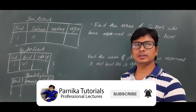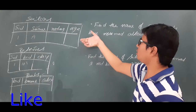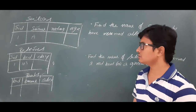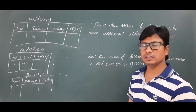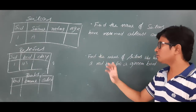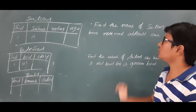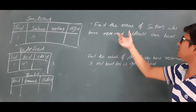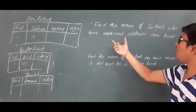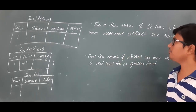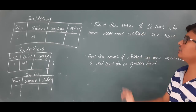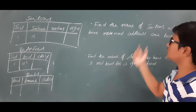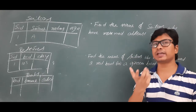Good morning friends. In the last video we identified relational algebra expressions for a few queries for the given three relations. In this video we will identify relational algebra expressions for two queries. Query number one: find the name of sailors who have reserved at least one boat — meaning find the names from the sailors table of sailors who have reserved at least one boat.